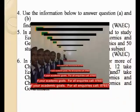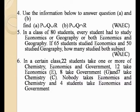Example number 5. In a class of 80 students, every student has to study economics or geography, or both. 65 students study economics and 50 students study geography. We are asked to find how many studied both subjects. All students must study at least one of the two subjects — no student is exempted.